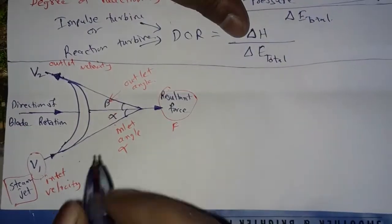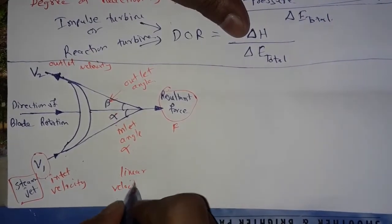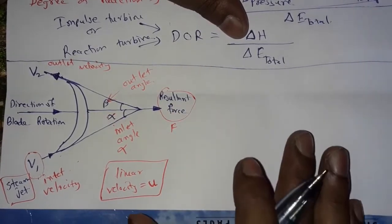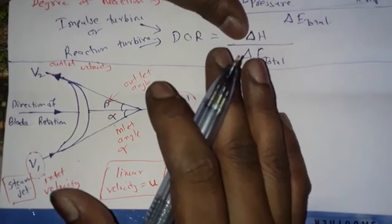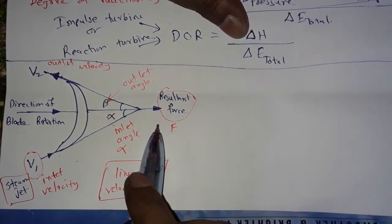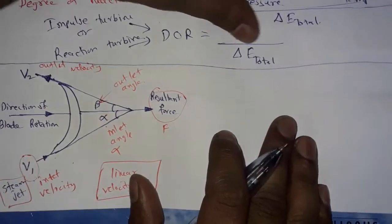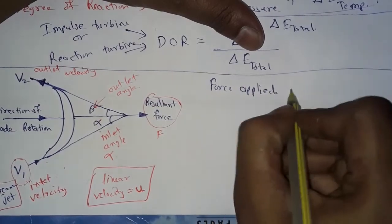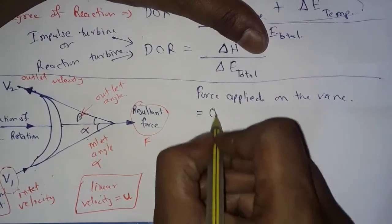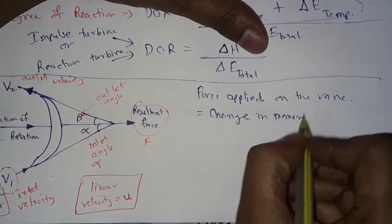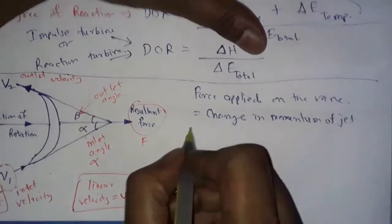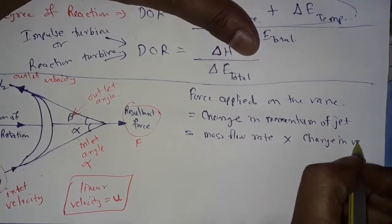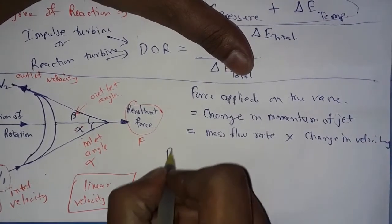After gliding over the curved surface, there is a change in momentum of the steam jet, due to which the blade moves with a linear velocity U. According to Newton's 2nd law, the change in momentum is directly proportional to the force acting on the blade. So the force applied on the blade is equal to the change in momentum of the jet, which equals mass flow rate times change in velocity.